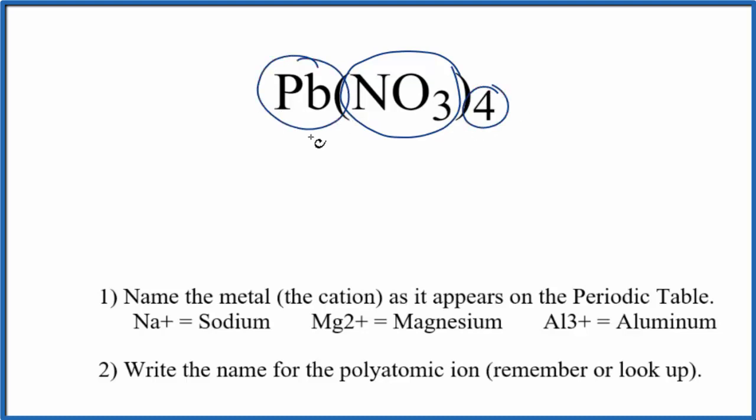Lead here, this is a transition metal. So we have this metal bonded to this polyatomic ion, which is made up of nonmetals. Metal and nonmetals, that's an ionic compound. We can use these rules here to write the name for Pb(NO3)4.